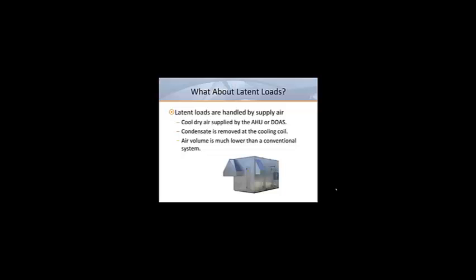So how do chilled beam systems address latent loads? It's handled by the supply air. Cool dry air is supplied by the air handler or dedicated outdoor air system and condensate is removed at the cooling coil. This means that the air volume is often much less than that of a conventional system with overhead diffusers because it only has to meet the ventilation and latent heat removal requirements. This results in smaller ductwork and possibly lower system static pressures.